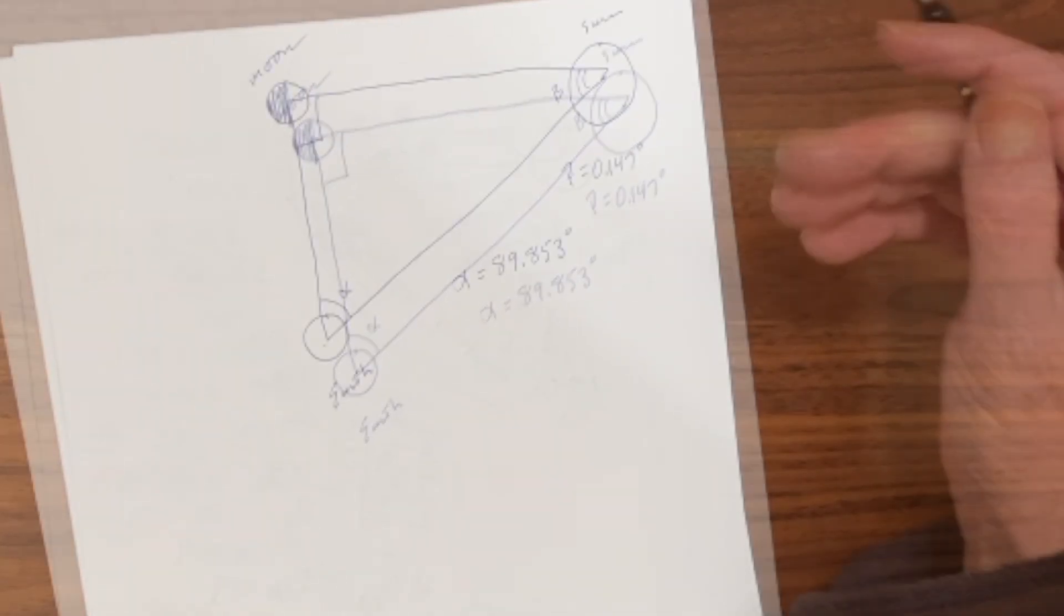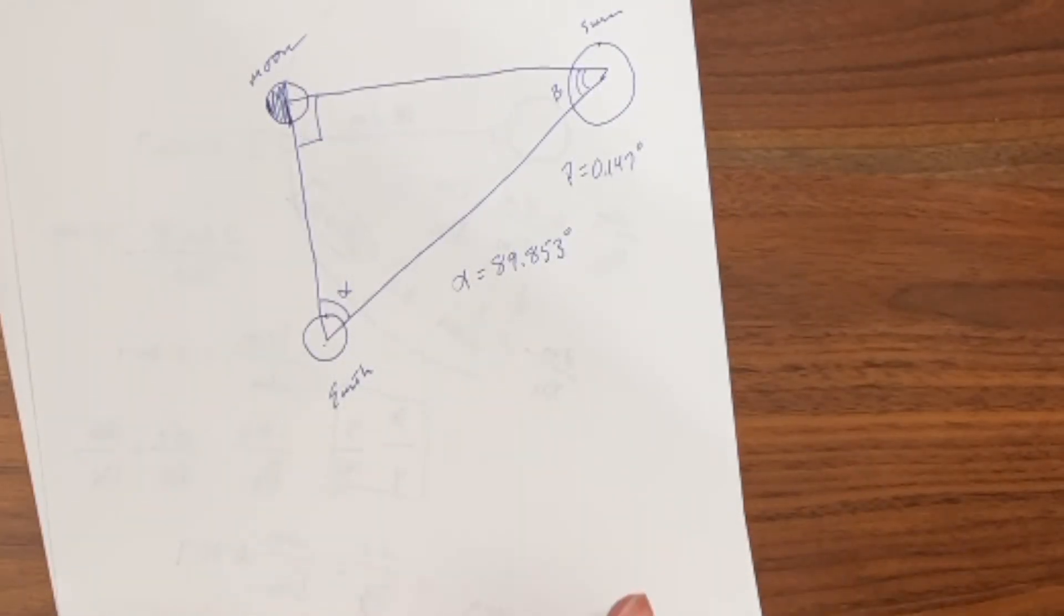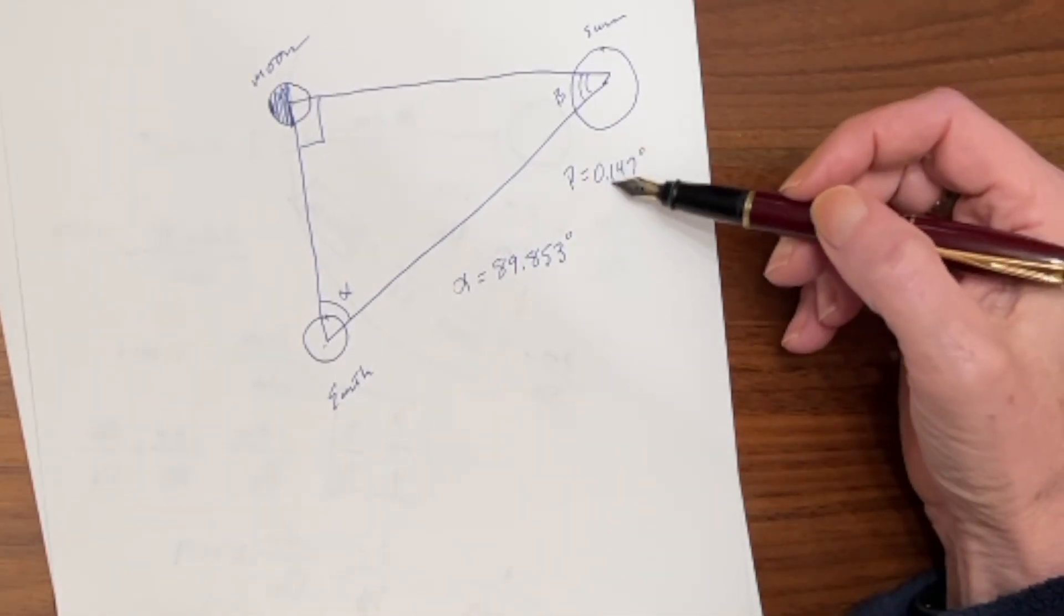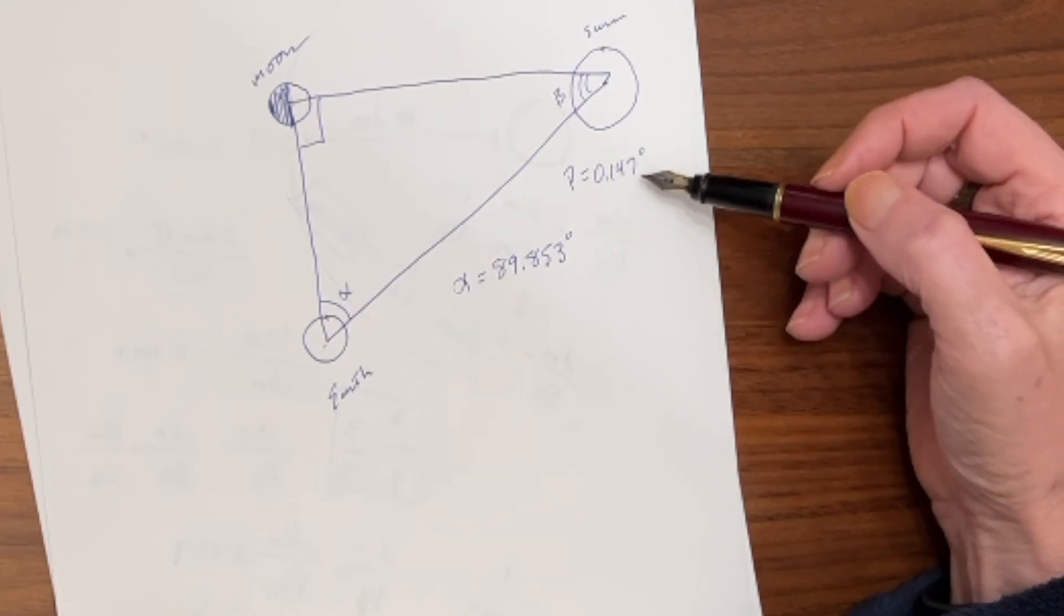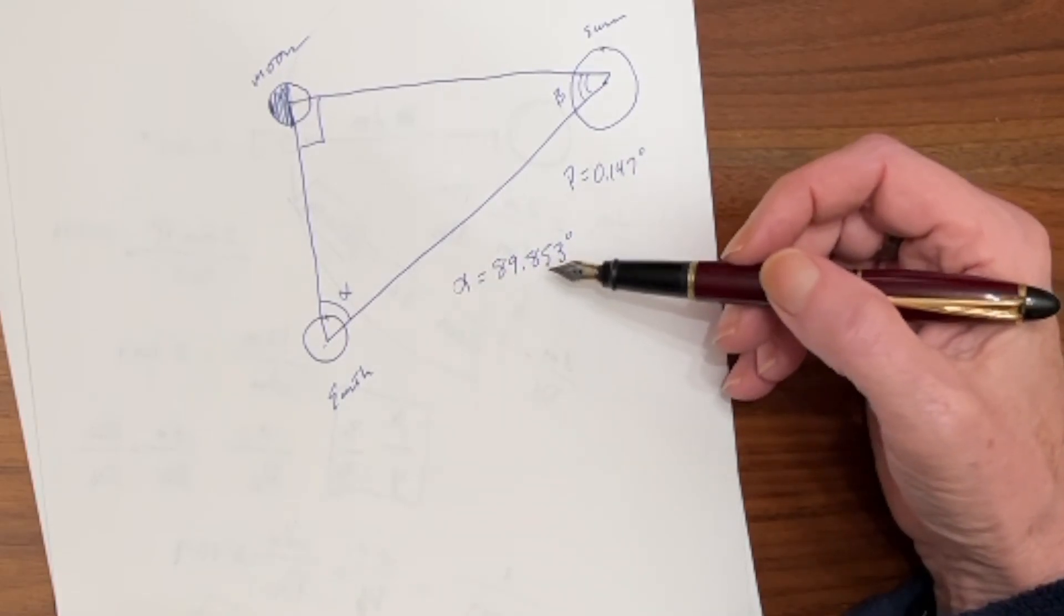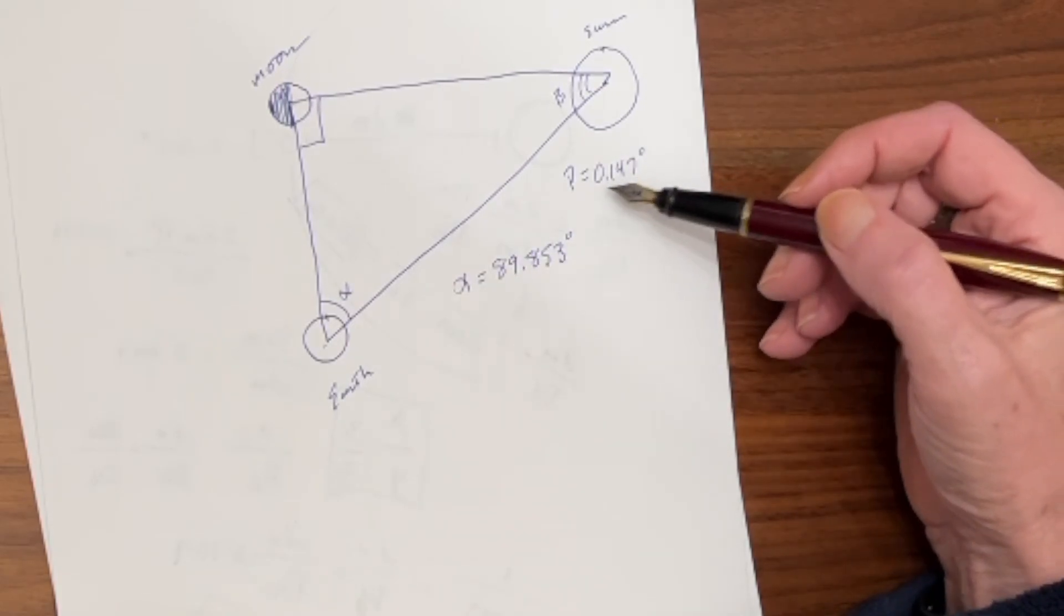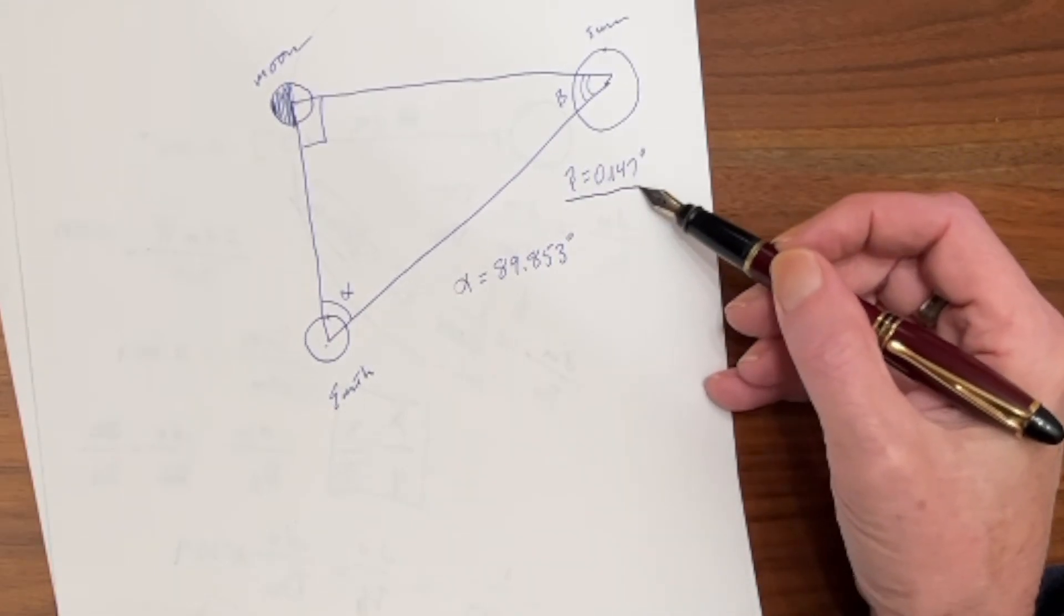Let's see if we can calculate this. Now because of the way a slide rule works, it does a much better job with an angle like this, a small angle, than it does with one that's close to 90 degrees. So we're going to go ahead and use angle beta.